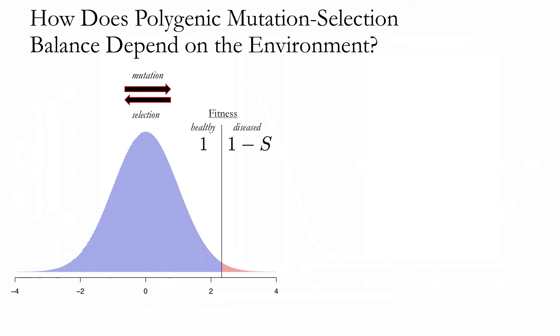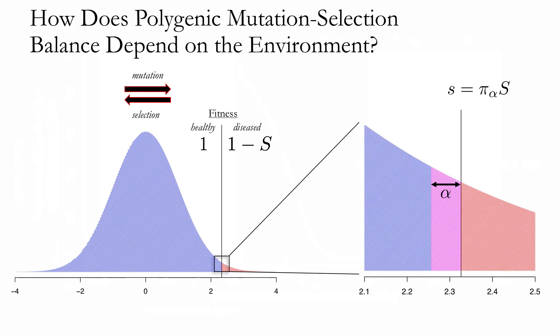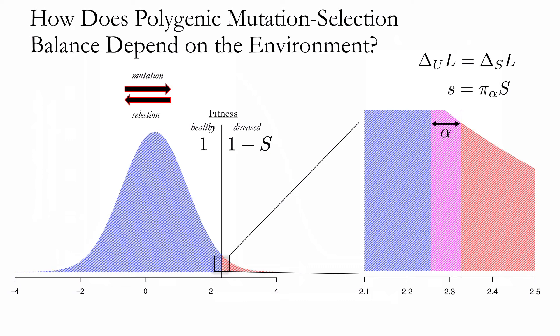This brings me to the second half of my talk: how changes in the environment impact the mutation-selection balance dynamic, and therefore the genetic architecture, over the long term. I just told you how selection coefficients depend on prevalence via the risk-scale effect size, and how mutation-selection balance holds prevalence constant over the long term. However, in reconciling schizophrenia's genetic architecture with the modern prevalence and fitness cost, I invoked a recent non-genetic increase in prevalence — modeled, for example, as a change in the mean of the environmental component of liability, which pushes a larger proportion of the population over the threshold, driving risk-scale effect sizes and therefore selection coefficients up.